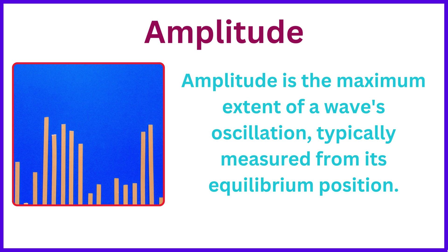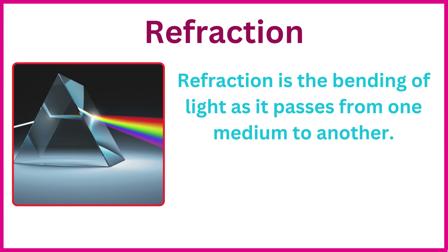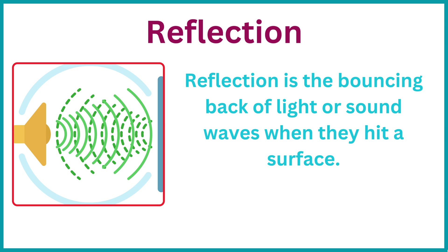Amplitude is the maximum extent of a wave oscillation, typically measured from its equilibrium position. Refraction is the bending of light as it passes from one medium to another. Reflection is the bouncing back of light or sound waves when they hit a surface.